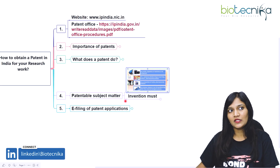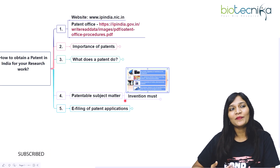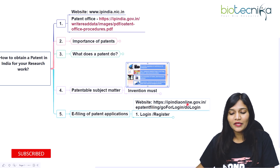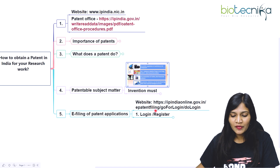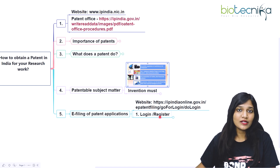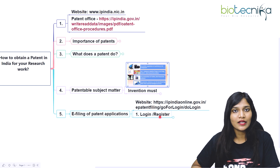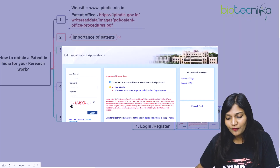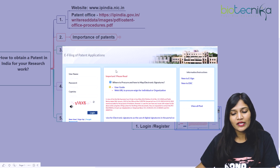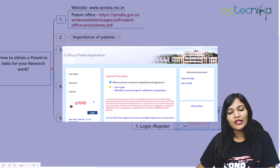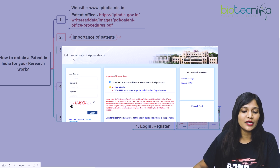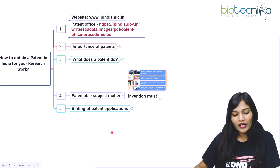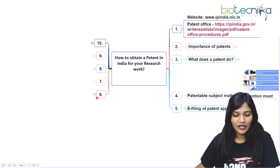The next topic is e-filing. E-filings are always available at ipindiaonline.gov.in. If you go to that site you just have to log in or register. I'm going to tell you whether you can apply directly or whether a patent agent applies for you. Once registered, you can see the page and start the patent application process in electronic mode.